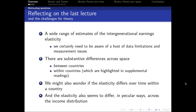There are substantial differences across space — certainly between countries. That's what the Great Gatsby Curve was about: significant variation across countries, underscored further by the World Bank report bringing over 70 countries into that mix. Even using the best possible data with comparable methods, we get a broad range. We'll also see, in coming lectures, the importance of variations within countries. This sets up a whole need for theory, not just for structuring our empirical approach but for helping us understand differences between countries and across time.